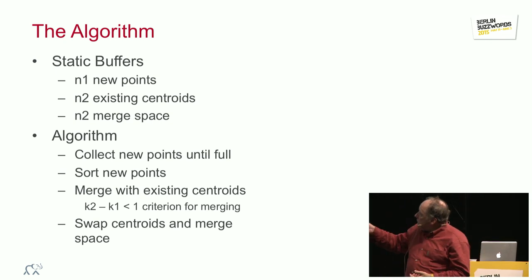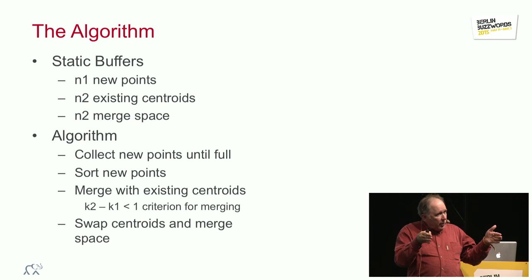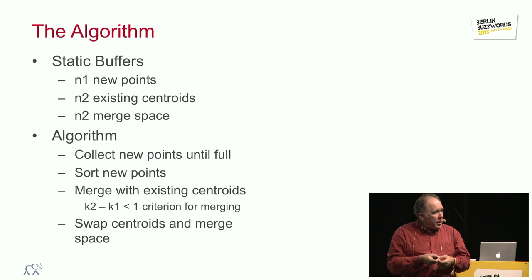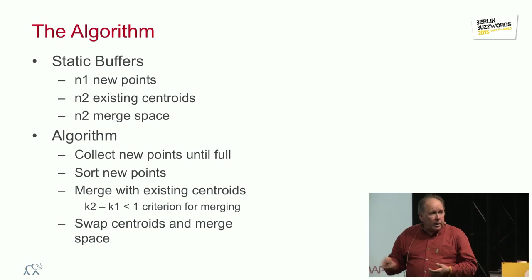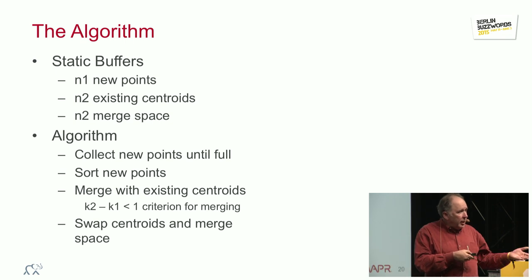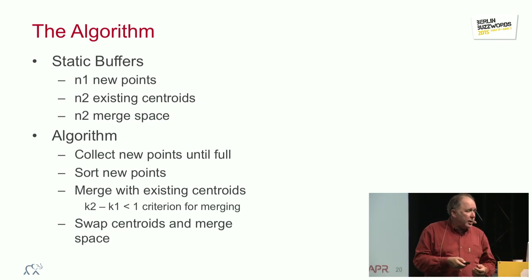And what we can do is we can have a short buffer for new points. When that fills up, we sort it and merge it with the old centroids. We then fill up the buffer, sort it, and merge it with the old centroids. Because of the size bound, these can all be statically allocated at the beginning of the algorithm, and there's no allocation in the process.